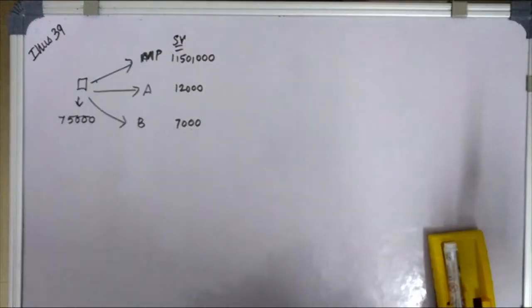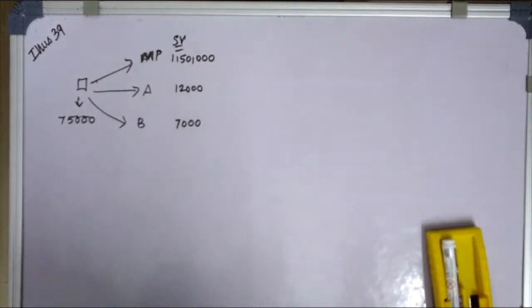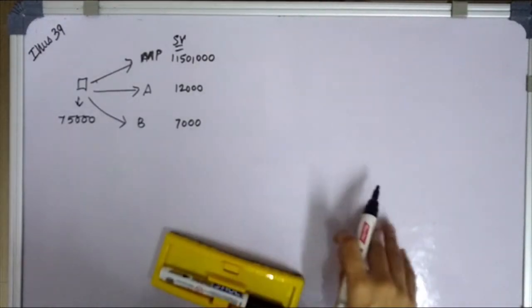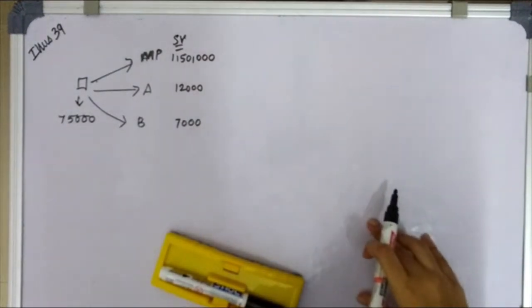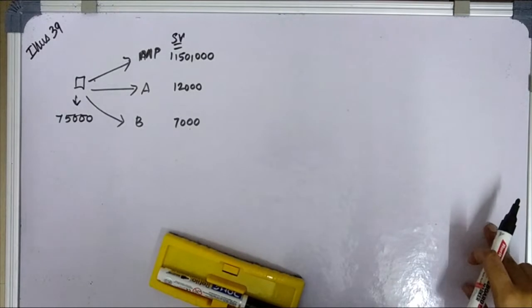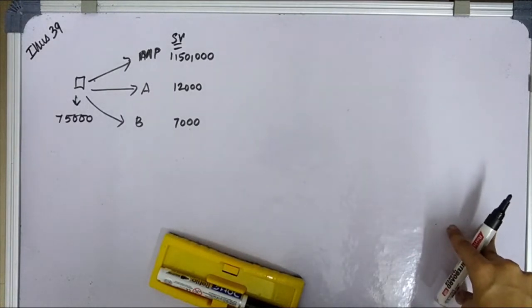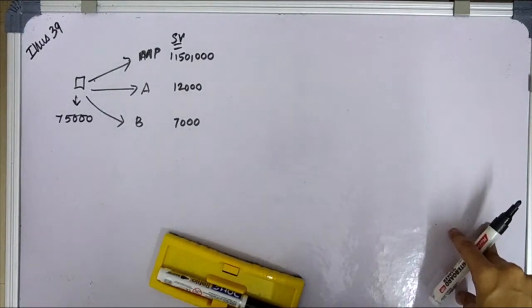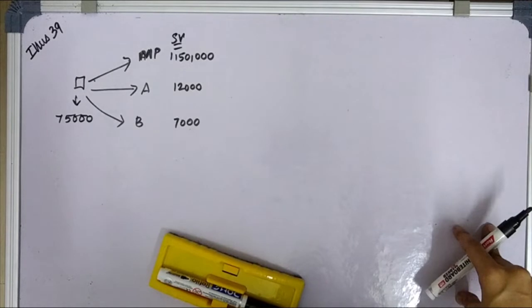After separation manufacturing cost: main product 23,000, by-product A is 2,200, and by-product B is 1,800.